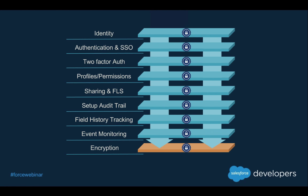It's important to stress that platform encryption isn't the only security feature available to you — it doesn't replace or substitute for any other features you're already using. For getting into your org, you have Salesforce identity, authentication, and SSO. Two-factor authentication is also available. Once your users are authenticated, profiles, permissions, sharing, and field-level security all ensure they only see the data they're supposed to see. For auditing and compliance, setup audit trail, field history tracking, and event monitoring are all in place.